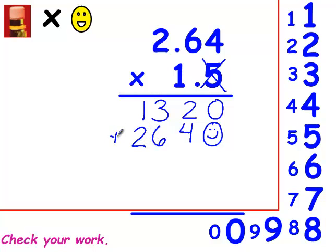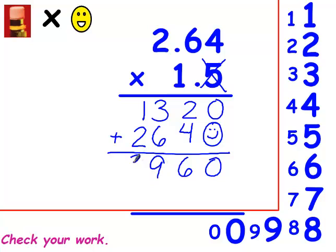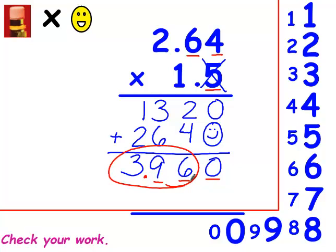That's what you should have gotten on the second row. Add these together: you have 0, 6, 9, and 3. Now go back up to the problem and underline how many numbers are behind the decimal point — that's how many have to be behind it in the answer. Your answer is 3 and 96 hundredths.